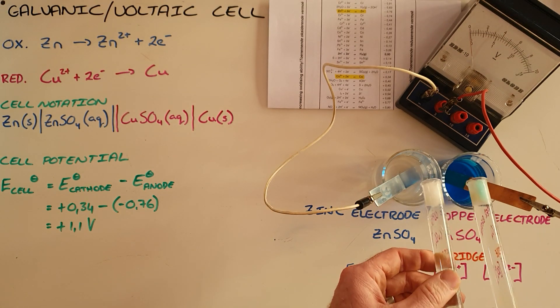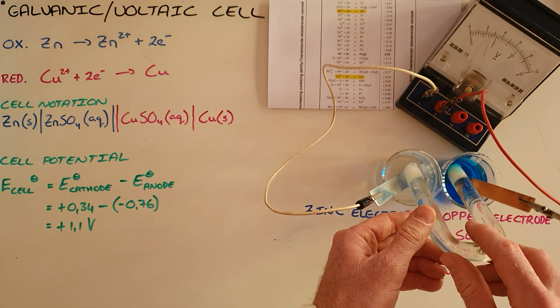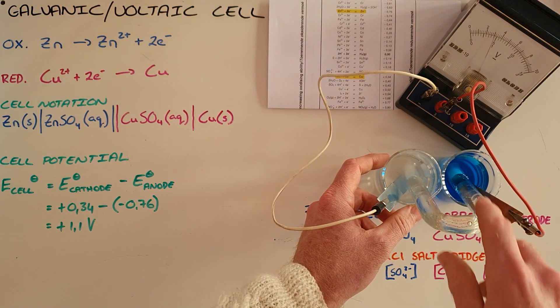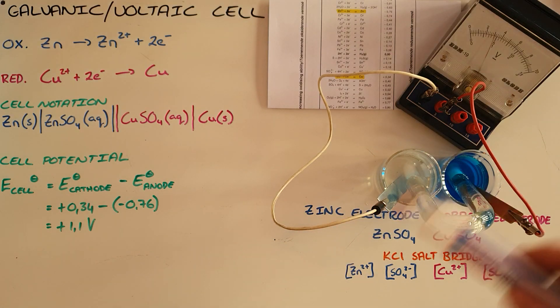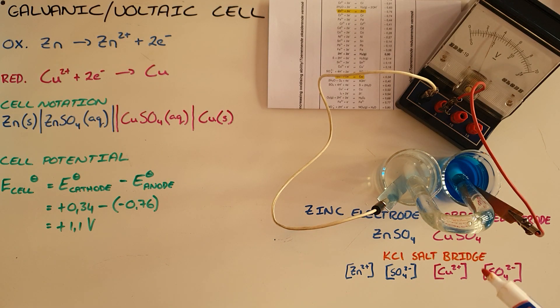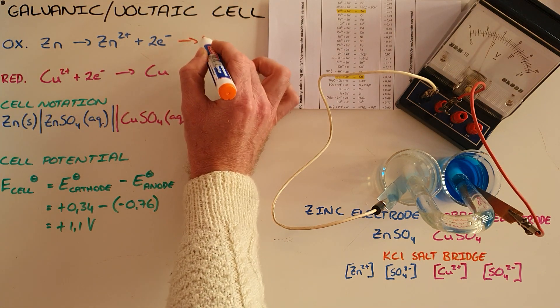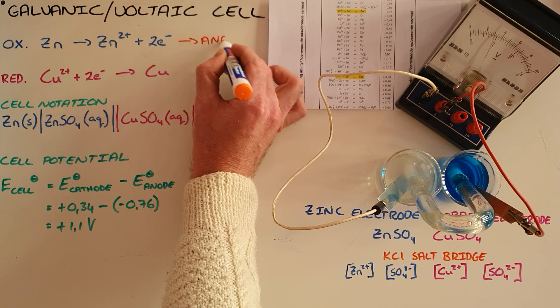And we see that as soon as I complete the circuit, the voltmeter measures a voltage since there is now a complete circuit and the salt bridge now acts to maintain electrical neutrality. So what we find happening in this electrode over here where oxidation takes place, we know that oxidation always occurs at the anode.